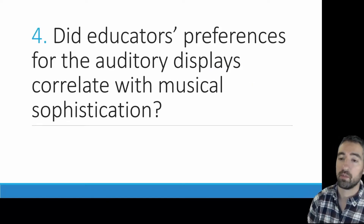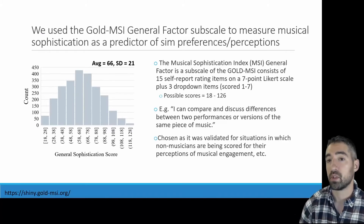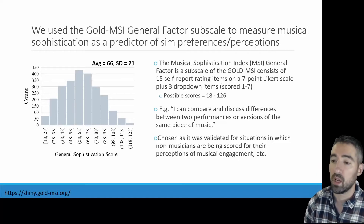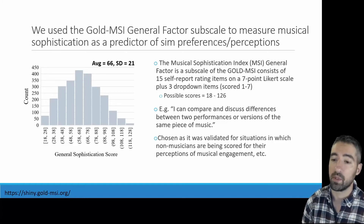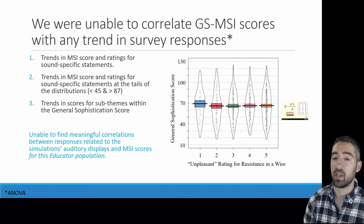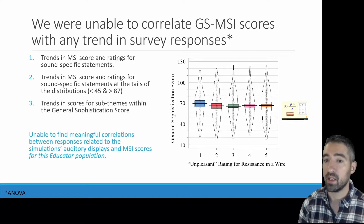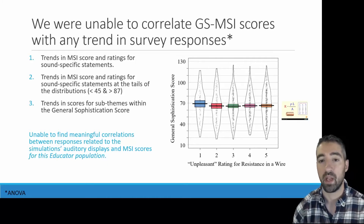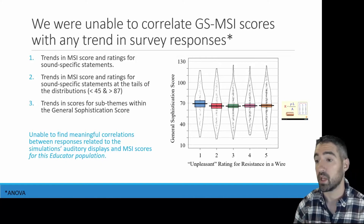Lastly, did educator preferences for auditory displays correlate with musical sophistication? We used the Gold-MSI general factor subscale to measure musical sophistication as a predictor of SIM preferences and perceptions, specifically the sound-specific statements. This was chosen because it was validated for situations in which non-musicians — like possibly our educators — are being scored for their perceptions of musical engagement. Unfortunately, we were unable to find any meaningful correlations between survey responses related to the simulations' auditory displays and Gold-MSI scores for this particular educator population.